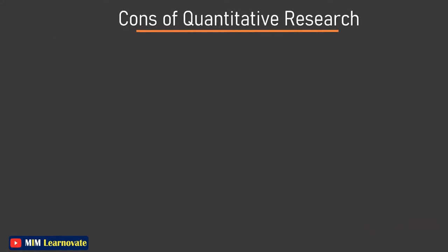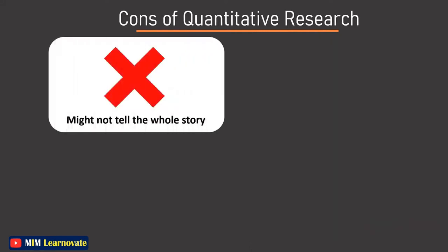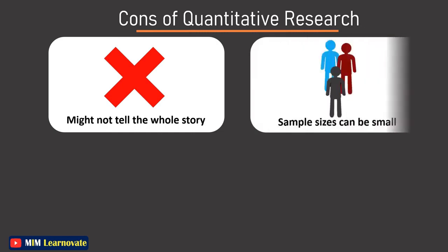Cons of quantitative research. Might not tell the whole story: The variables you collect through the quantitative method can be superficial or limited. For example, asking people how much coffee they drink doesn't tell you very much. It can also be the case that other factors you are studying affect the responses people give. Sample sizes can be small: small sample sizes can limit the impact of research. For example, asking 10 people about their coffee drinking habits would not give you a good idea of how coffee consumption plays out across the country.